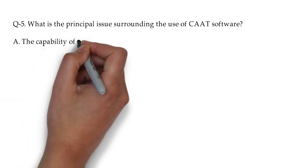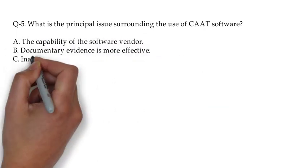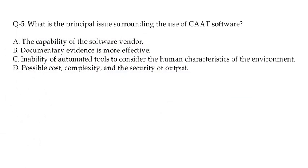Question No. 5: what is the principal issue surrounding the use of CAT software? Option A, the capability of the software vendor. Option B, documentary evidence is more effective. Option C, inability of automated tools to consider the human characteristics of the environment. And option D, possible cost, complexity and security of output.